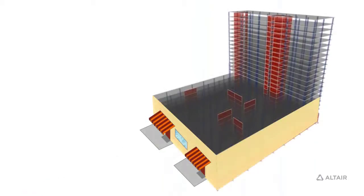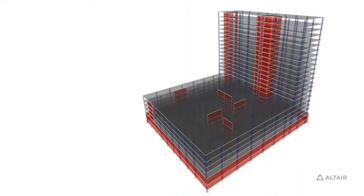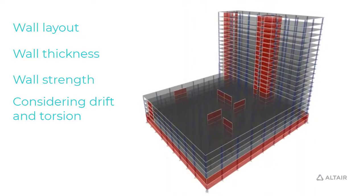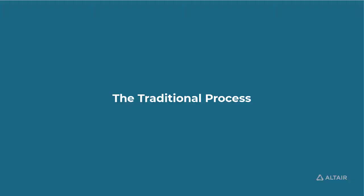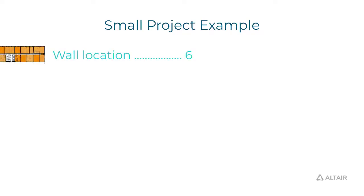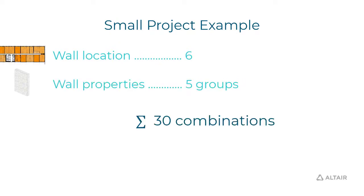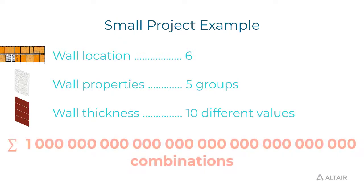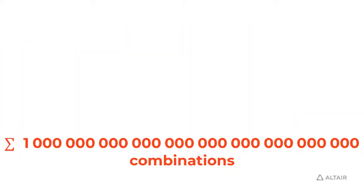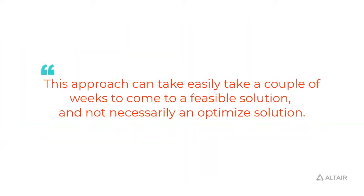Once a layout is agreed upon, we have to come up with wall thicknesses and strengths that meet the stiffness and strength requirements — meeting the drift criteria. In our traditional process, you would select some preliminary design based on experience, run the analysis, and if something doesn't work, you iterate. This trial-and-error approach can take easily a couple of weeks to come to a feasible solution, and not necessarily an optimized solution.